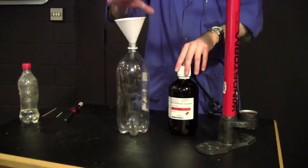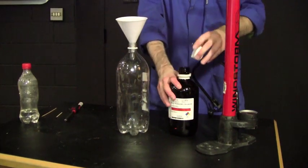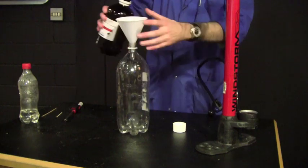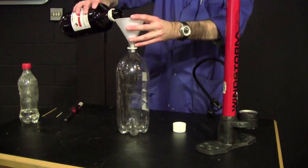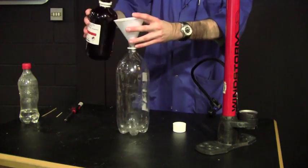We can make even thicker clouds by doing the same thing with different materials. This time we'll use rubbing alcohol, which is a liquid that evaporates much more quickly than water, giving us plenty of vapor available to make our cloud.